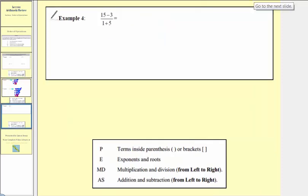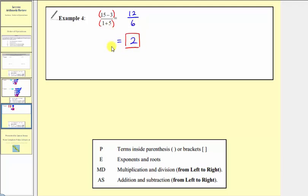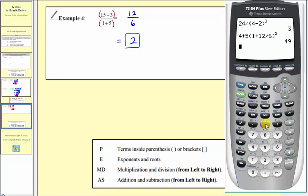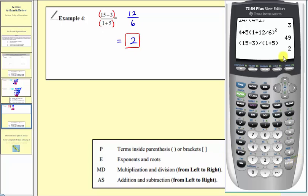Now for our last example, notice how we have an expression in fraction form. Whenever simplifying a fraction, there are implied parentheses around the numerator and denominator. So when we have an expression in fraction form, we want to simplify the numerator and denominator separately, and then perform the division. So fifteen minus three is equal to twelve, and one plus five is equal to six, and twelve divided by six is equal to two. Checking on the calculator, it is important to include parentheses around the numerator and denominator: open parenthesis fifteen minus three, close parenthesis, divided by open parenthesis one plus five, close parenthesis, and enter — verifying our answer.